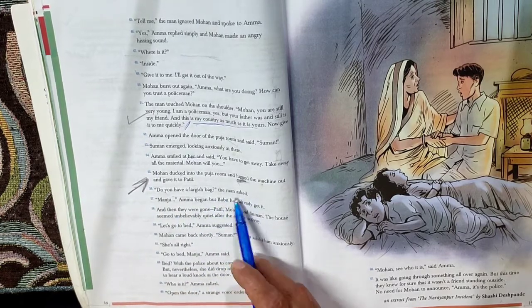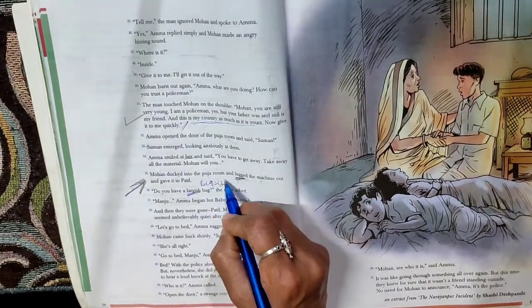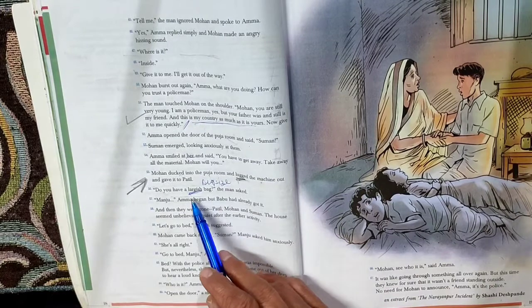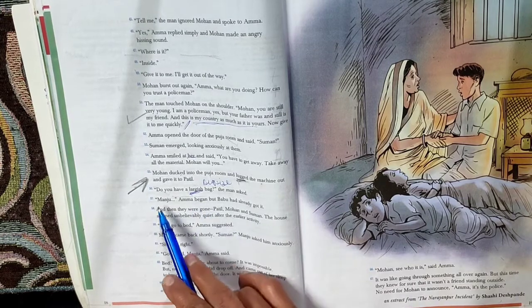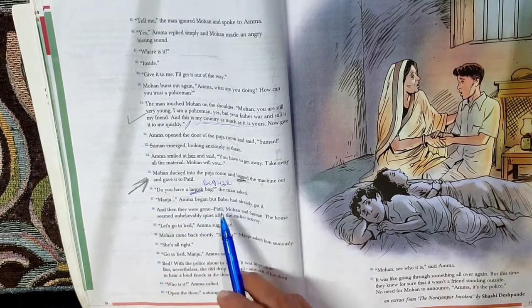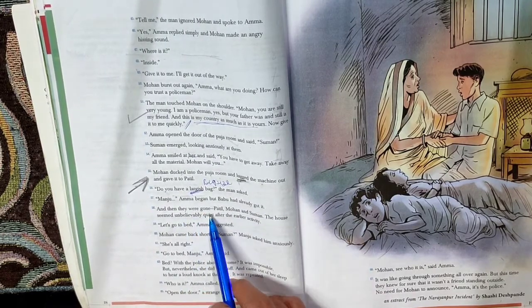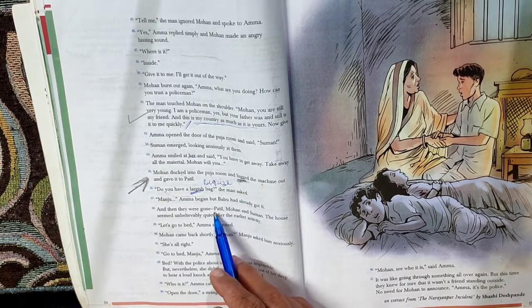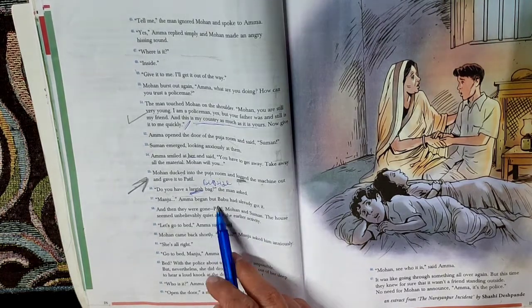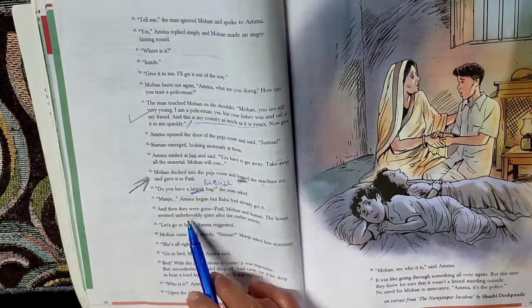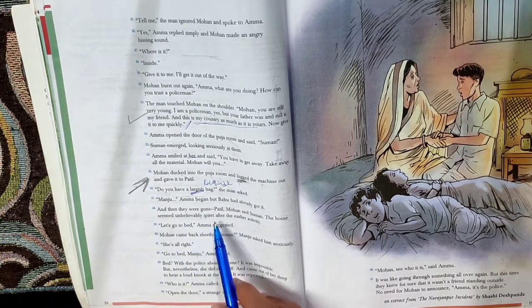Do you have a large-ish bag? The man asked. Large-ish, a big size. Large-ish means big, big size bag to keep the machine inside the bag. Manju, Amma began, but Babu had already got it. So Amma was about to tell Manju to bring a big sized bag, but Babu already got it. So Babu is very receptive. And then they were gone. Who were gone? Patel, Mohan and Suman. The house seemed unbelievably quiet after the earlier activity. Now there was pin drop silence inside the house.